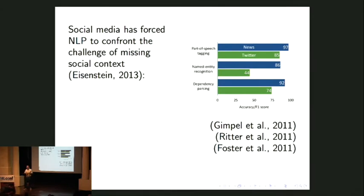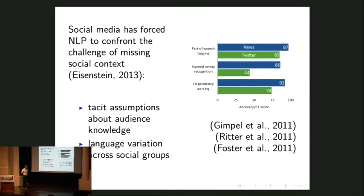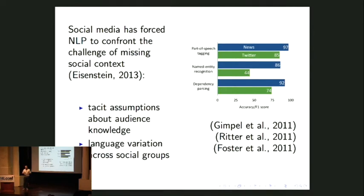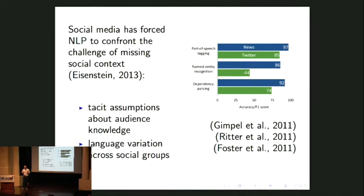So why is this? What is it about these other domains that makes them so much more difficult, such that we can't just apply these models directly? I'll focus on two phenomena today. The first is tacit assumptions about audience knowledge that writers make in domains other than news text, and how we can overcome that with machine learning. The second is language variation — that rigorous enforcement mechanism that exists in Wall Street Journal journalism does not exist in social media. What can we do about that?